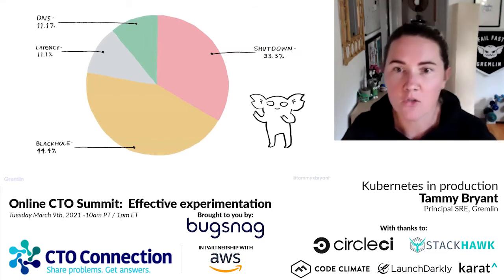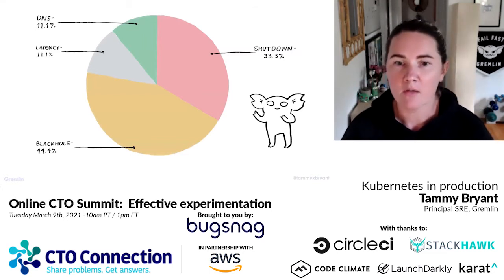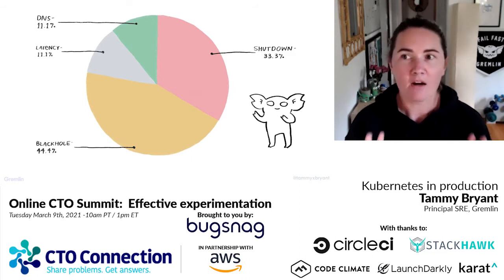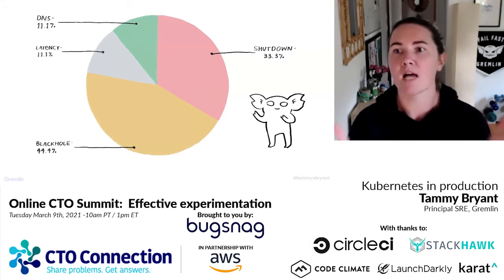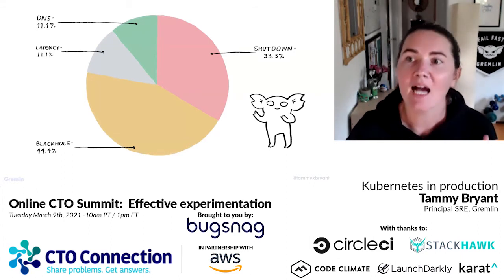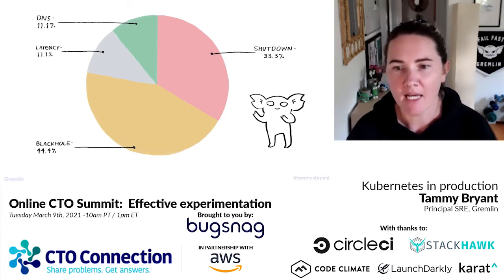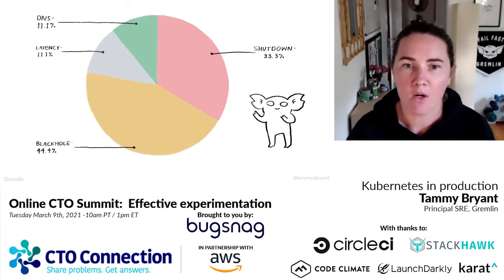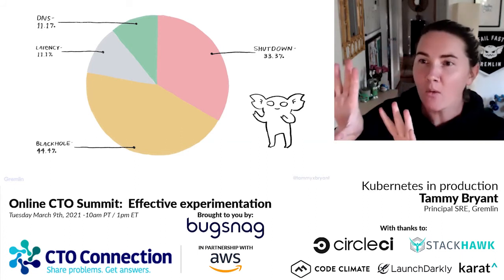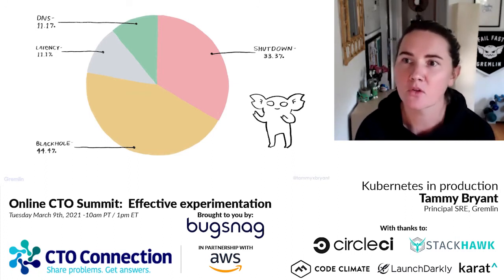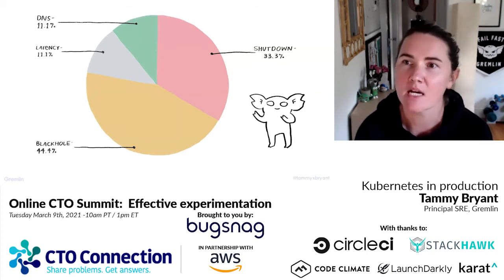Now let's look at the data for Google Cloud. Outages were only ever reported about GKE, and this view is very different compared to AWS and the overall chart. Black hole is the biggest issue when running Kubernetes on GKE — nodes unavailable, pods unavailable, traffic being sent to nowhere. There are no CPU-related outages for Google Cloud at all. So if I were running Kubernetes on Google Cloud, I would prioritize looking at unavailability first, and then shutdown second.